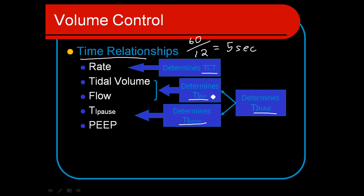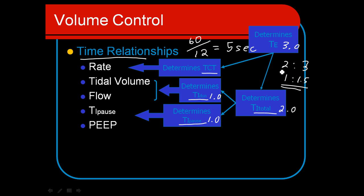Our Ti pause is going to directly increase the Ti total. So let's just pretend in this case we've got 1.0 seconds for each of these. That would give us a Ti total of two seconds. And then what that means is that we would have three seconds left over for Te. So that gives us a 2 to 3 or a 1 to 1.5 IE ratio. And we always report that to the lowest common numerator, so we call that a 1 to 1.5 IE ratio. The PEEP does not alter the time relationships.